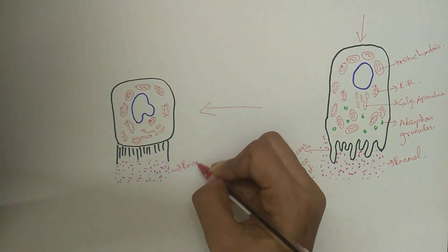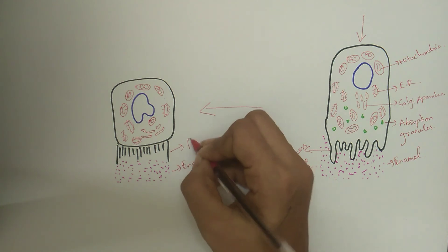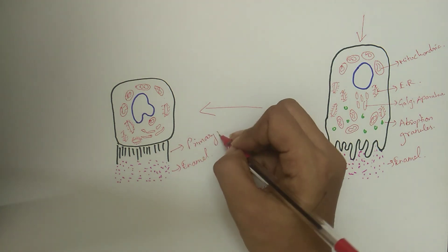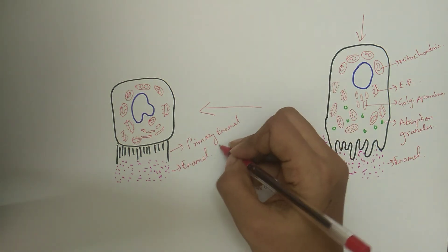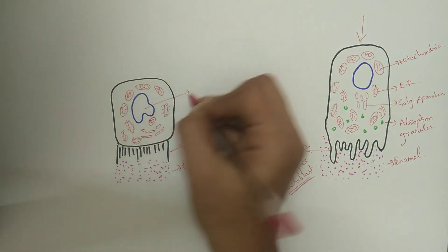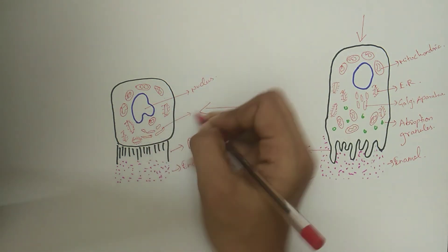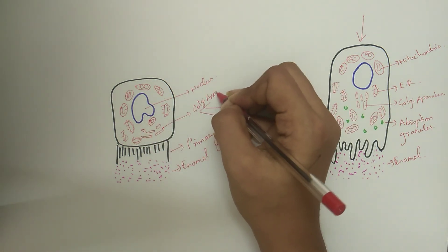What happens if this layer is lost? There may be resorption of enamel or a layer of cementum covering the enamel may occur if connective tissue comes in contact with enamel.